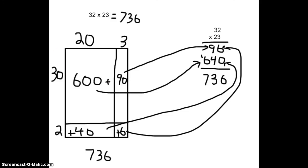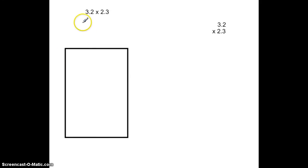Now let's move on to decimal numbers. What happens if we have a number like 3.2 times 2.3? Well, once again, we can break up our rectangle into separate pieces. And we want to put them into compatible numbers. So if we look at 2.3...